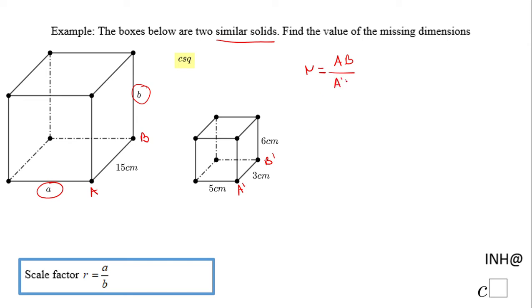So in this case we have 15 over 3, which means 5. The scale factor here is 5. In other words, if I multiply by 5 these 3, I get these 15. And now I can get a and B.